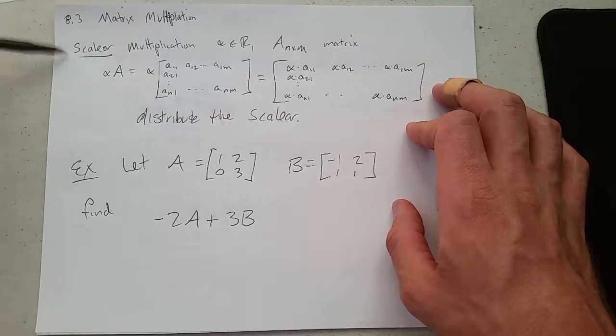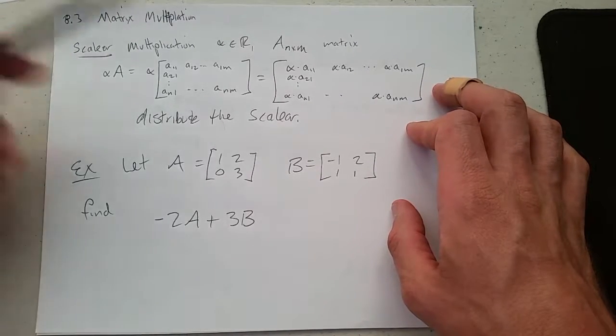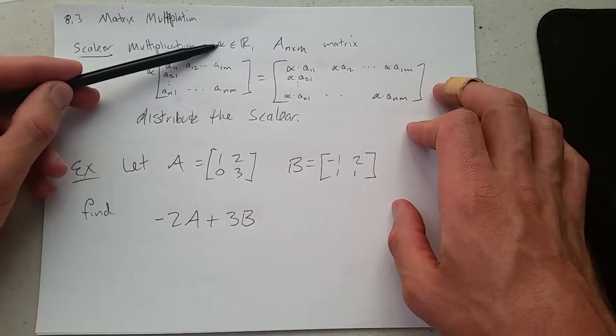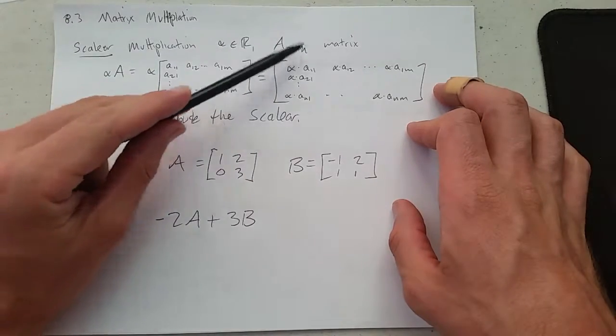We're going to start out with easier multiplications called scalar multiplication. So you pick a real number called a scalar and an n by m matrix.